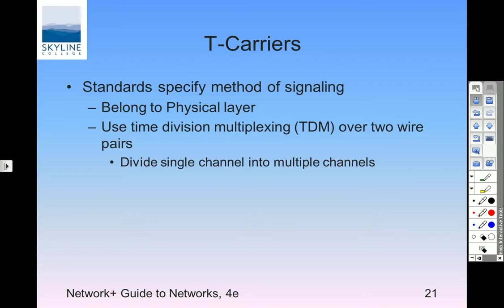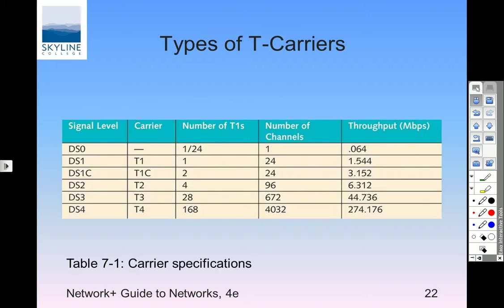T-carriers belong to the physical layer — Layer 1 and 2. Time division multiplexing over wire pairs: TDM gives a specific amount of time to send your data. With CSMA/CD you have access to the media until you no longer need it. T-carriers can be single channels or multiple channels. When you get up into T4s — 274 megabits per second — you're talking something we use. T1, which used to be absolutely desirable, is not so fast anymore.